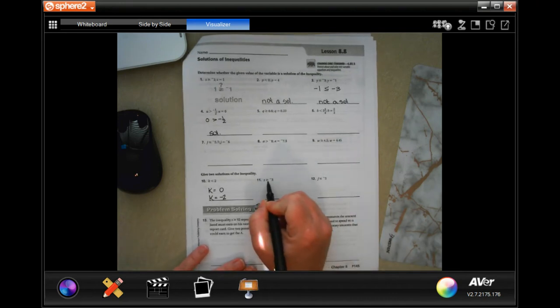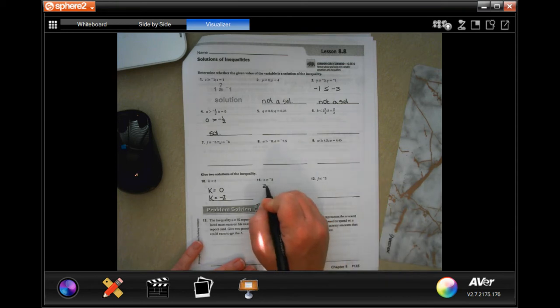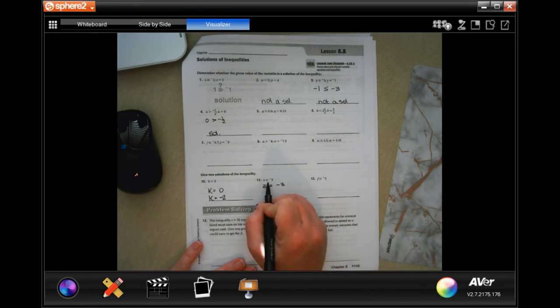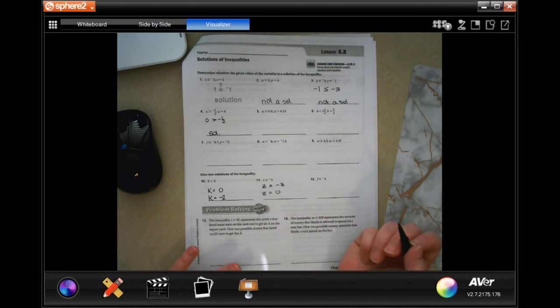Now this one says that z is bigger than or equal to negative 3. So z could be negative 3 because it's bigger than or equal to, or z equals 0. z would be bigger than negative 3 then.